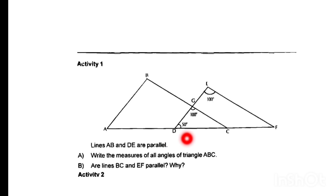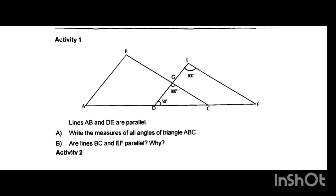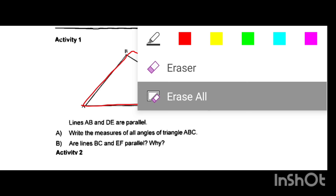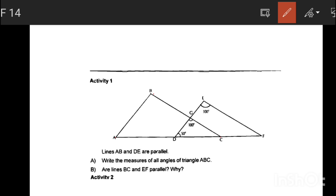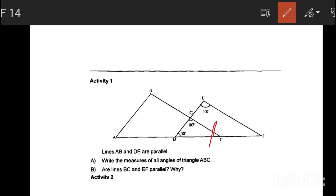I will write the measure of all angles of triangle ABC. Lines B, C and E, F are given. Here is triangle ABC — where is C? The measure of the angles: one angle is 150, and 180 minus 150 equals 30. So angle C is 30 degrees.